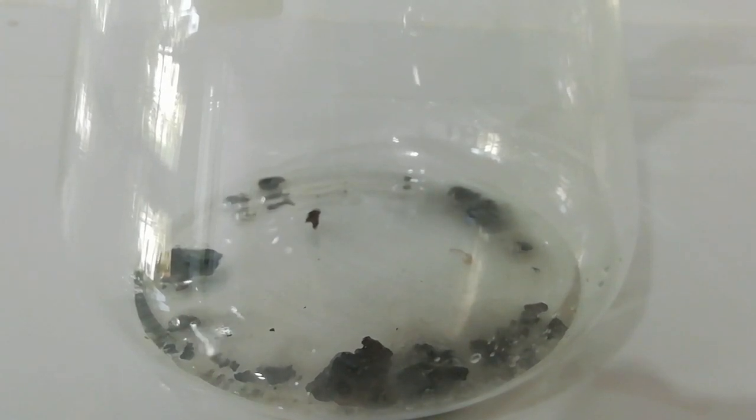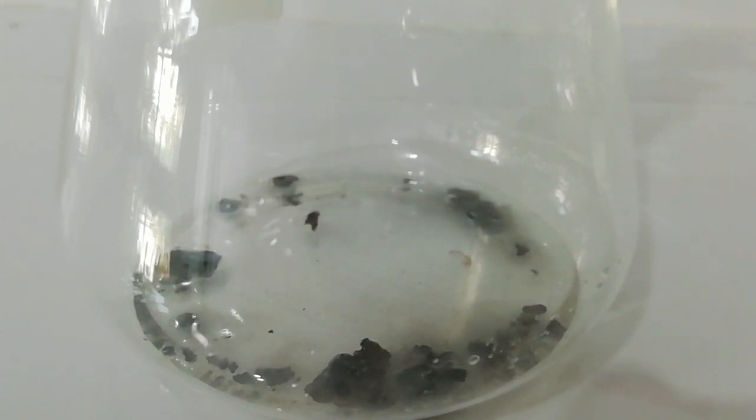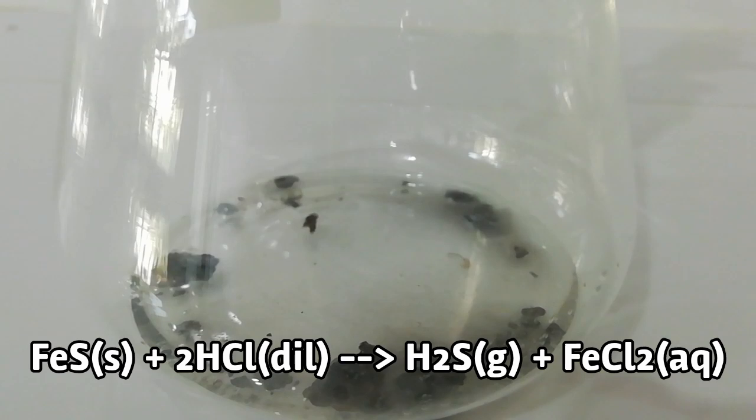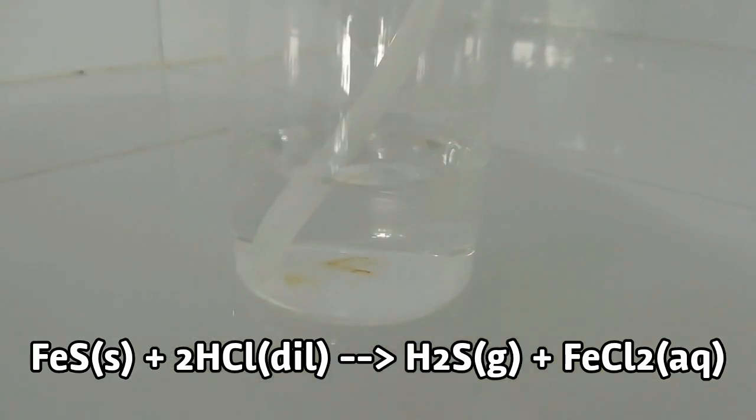Dilute hydrochloric acid was slowly added using an addition funnel. During the reaction, iron sulfide reacts with hydrochloric acid and forms hydrogen sulfide gas.